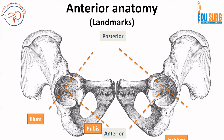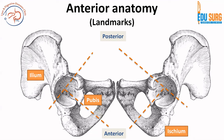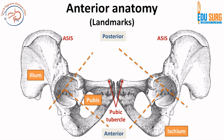The hip bone — all of us know there are three parts: the ileum, pubes, and ischium. The important landmarks we should be aware of are the anterior superior iliac spine, the pubic tubercle, and the pubic symphysis in the midline. The superior pubic ramus on the inner side has the pecten pubis, and on the posterior side of the superior pubic ramus is the pectineal line.